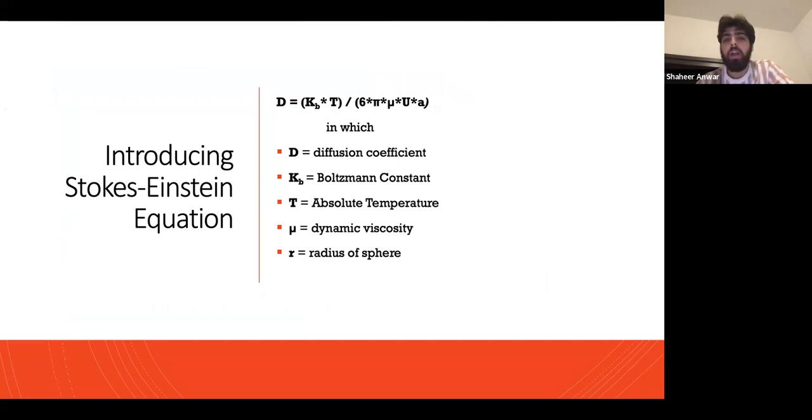Introducing the Stokes-Einstein equation: D = (k_b * T) / (6 * π * μ * a), where D equals the diffusion coefficient, k_b equals Boltzmann's constant, T equals absolute temperature, μ equals dynamic viscosity, and a equals radius of sphere.